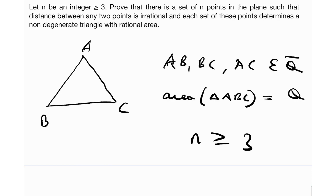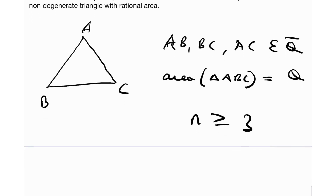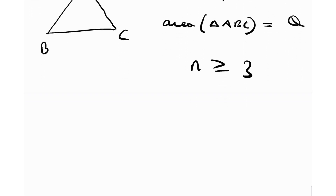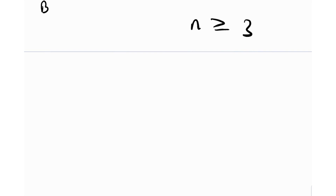So at the end of the day, the core idea of what we need to prove is that even though the sides are irrational, the area can still be rational — to prove the existence of that claim. Before we get into this problem, I want to introduce you to something called lattice points. Lattice points is really just a definition.